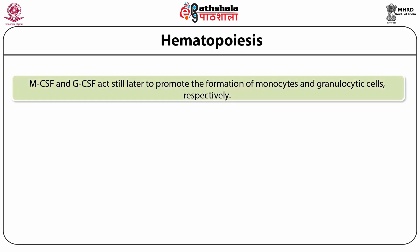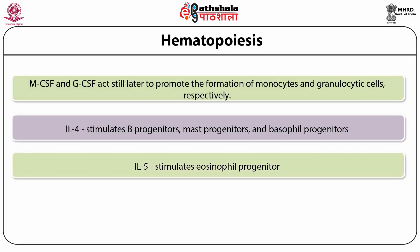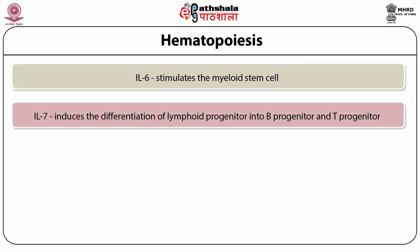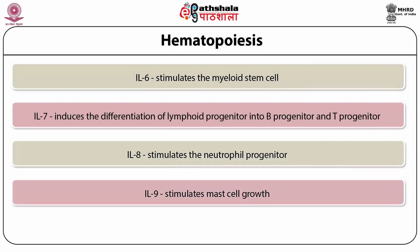M-CSF and G-CSF act still later to promote formation of monocytes and granulocyte cells respectively. IL-4 stimulates B progenitor. IL-5 stimulates eosinophil progenitor. IL-6 stimulates the myeloid stem cell. IL-7 induces the differentiation of lymphoid progenitor into B cell progenitor and T cell progenitor. IL-8 stimulates the neutrophil progenitor. IL-9 stimulates mast cell growth.